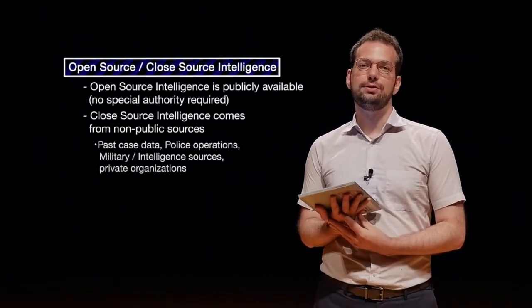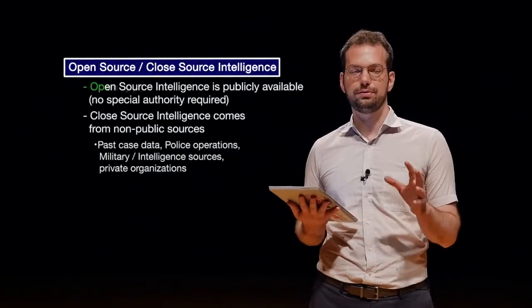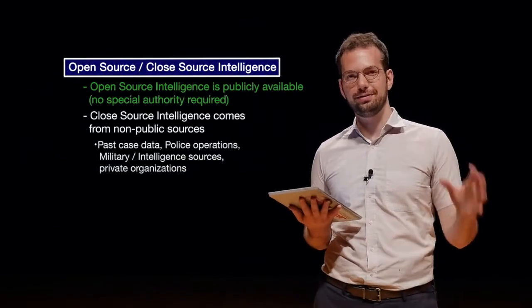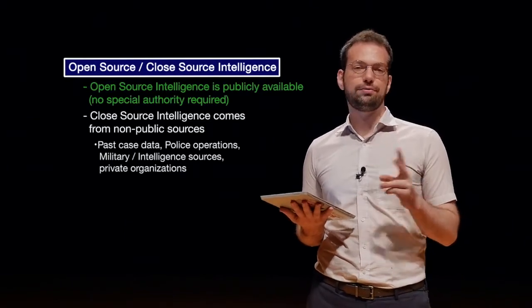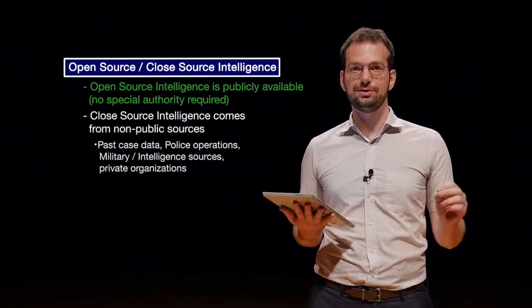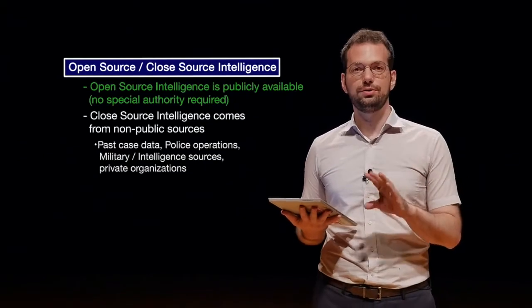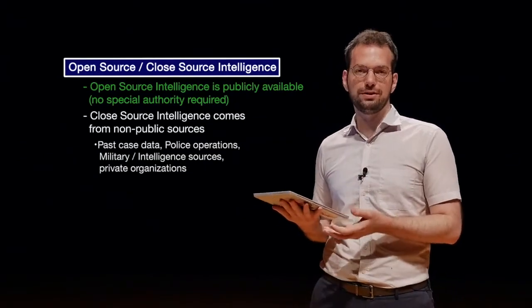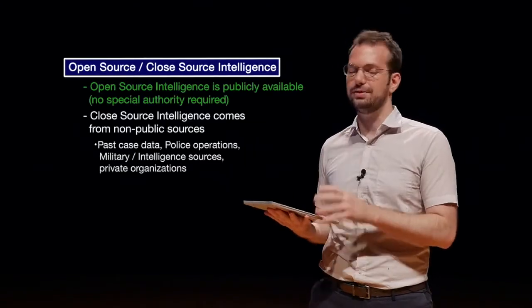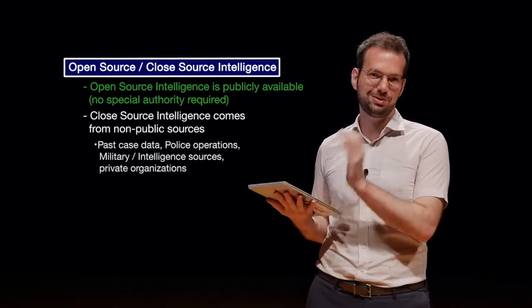Open source and closed source intelligence — whenever we're doing intelligence, we're looking for more information about users, about places, about activities that might have taken place. There are two different sources basically: open sources, which are available to the public, and closed sources, which are available only on a restricted basis, either only to an organization, the police, or military intelligence, whatever.